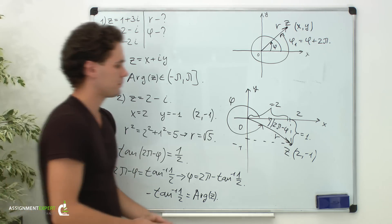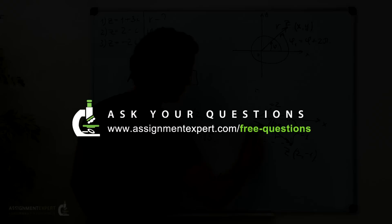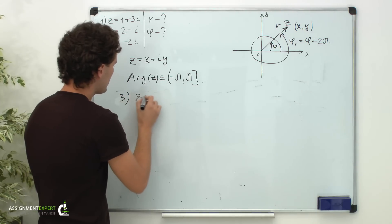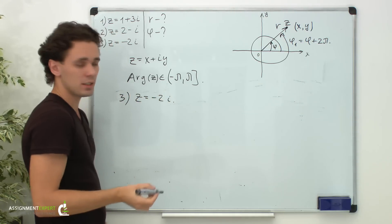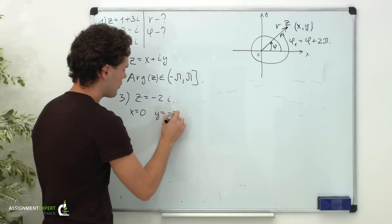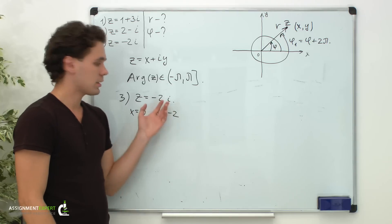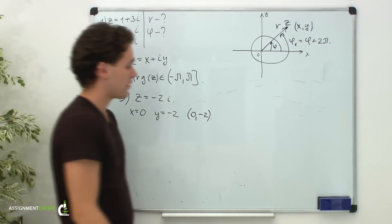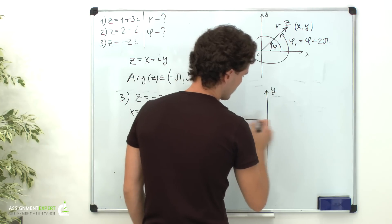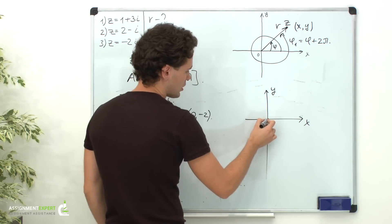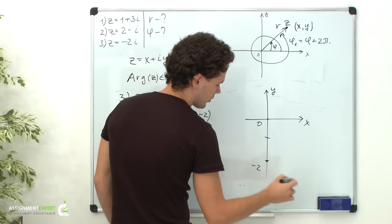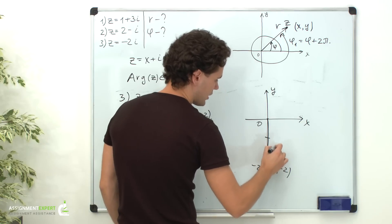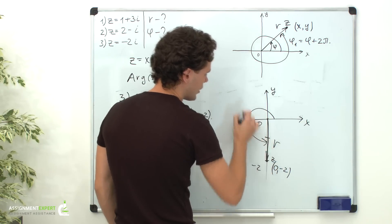Finally, let's proceed to our last example. In the third example we have the complex number z equals negative 2i. In this case x equals 0 and y equals negative 2, so the radius vector representing this complex number has an endpoint (0, negative 2). This is our radius vector representing complex number z with modulus r, and this is the angle phi.